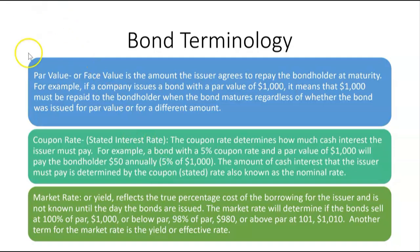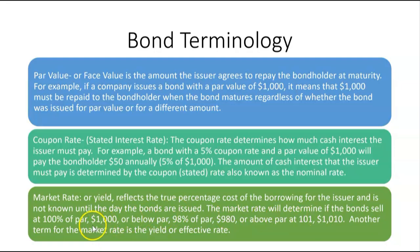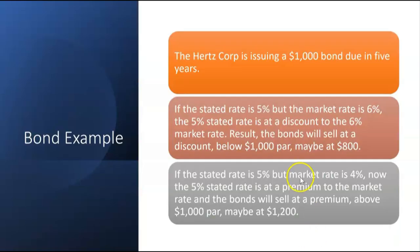The market rate, or yield, reflects the true percentage cost of borrowing for the issuer. This market rate is not known until the day the bonds are issued. The market rate determines if bonds sell at 100% of par ($1,000), below par at maybe 98% ($980 per bond), or above par at maybe 101% ($1,010). The market rate, also called the effective rate of interest, is the true percentage cost of borrowing for the issuing company.